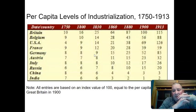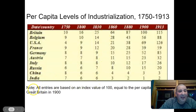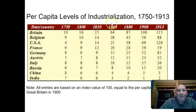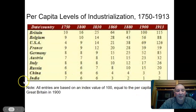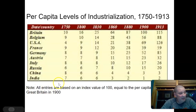With this data, I want you to draw three conclusions. First, understand how the chart works: all entries are based on an index value of 100 equal to the per capita level of Great Britain in 1900. This is per capita levels of industrialization — and make sure you know what 'per capita' means. Talk with your partner and draw three different conclusions from this chart. There's a lot of information here.